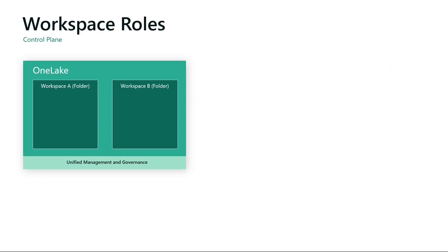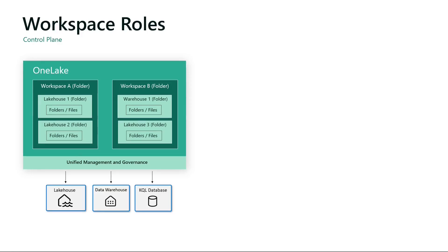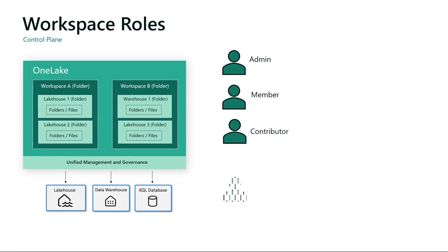Microsoft Fabric Workspaces sit on top of OneLake. The workspace is the primary security boundary for data within OneLake. Each workspace represents a single domain or project area where teams can collaborate on data. You can manage security in the workspace by inviting users to participate and assigning one of the four workspace roles: Admin, Member, Contributor, and Viewer.